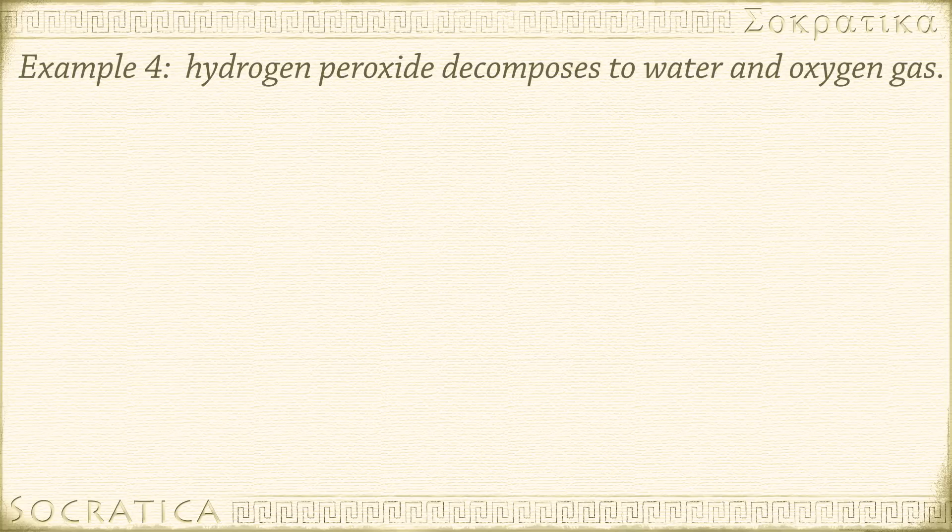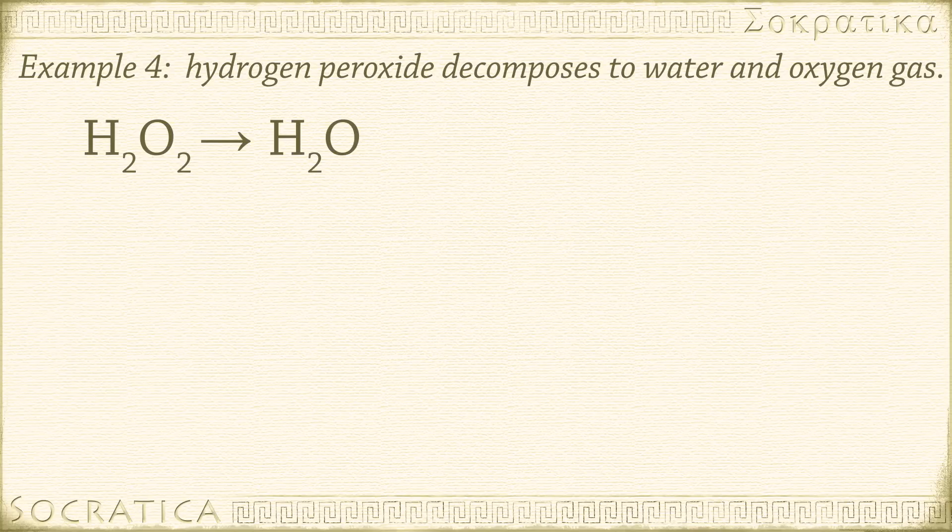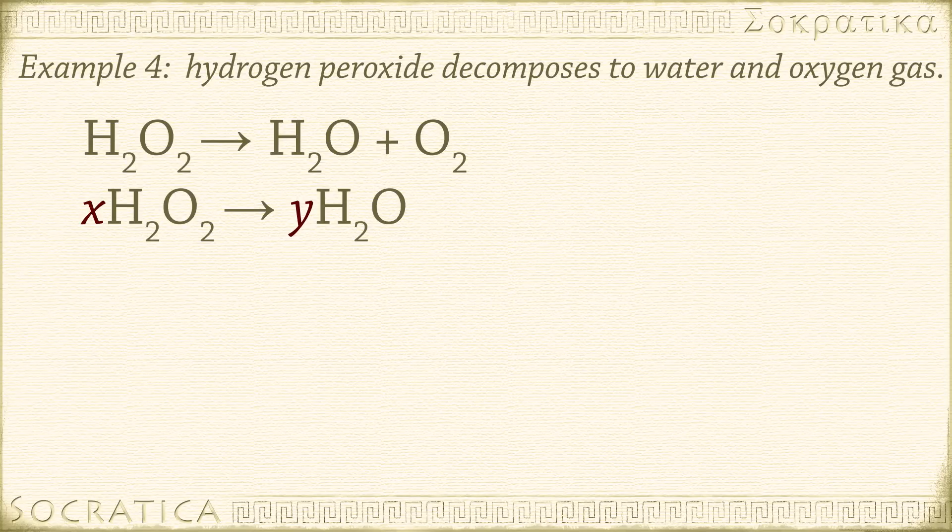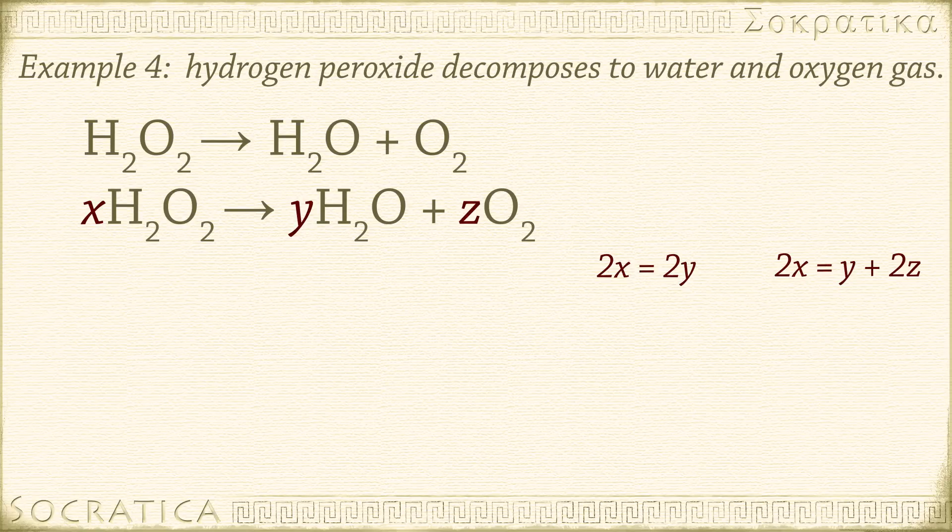Our next example is hydrogen peroxide decomposing into water and oxygen gas. H2O2 yields H2O plus O2. Assign variables to the coefficients. XH2O2 yields YH2O plus ZO2. Look at hydrogen on both sides. That gives us 2X equals 2Y. The oxygen relationship is 2X equals Y plus 2Z.